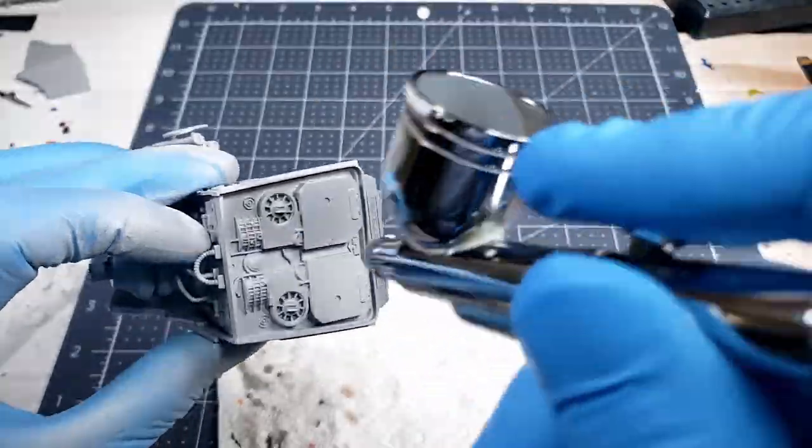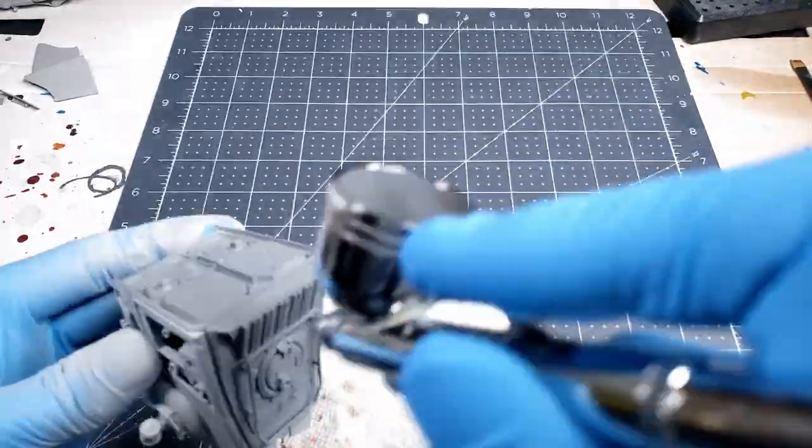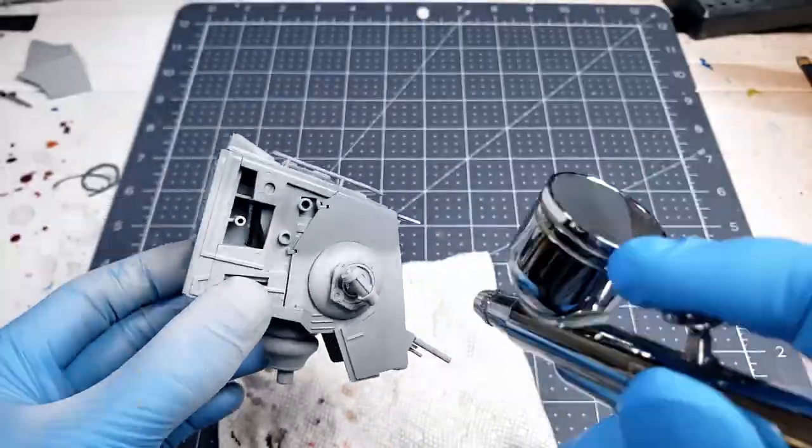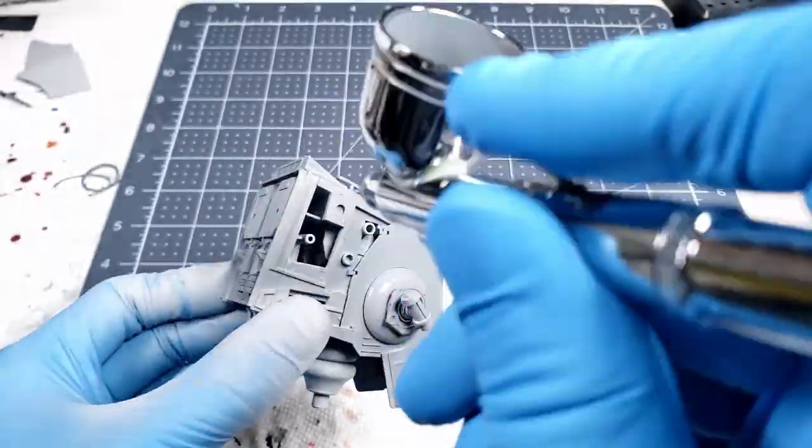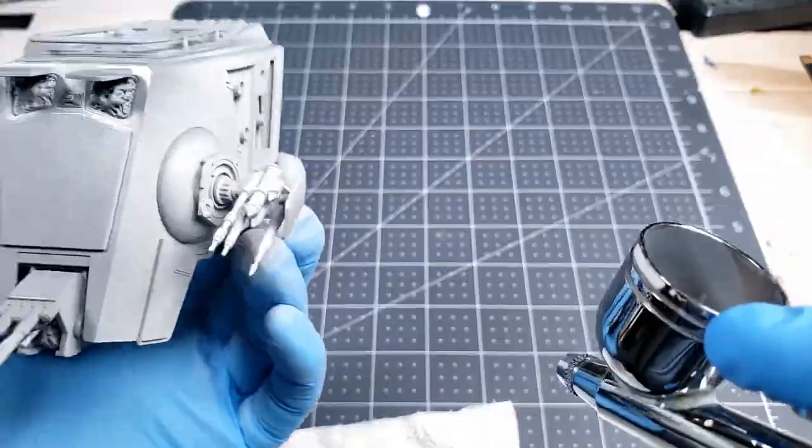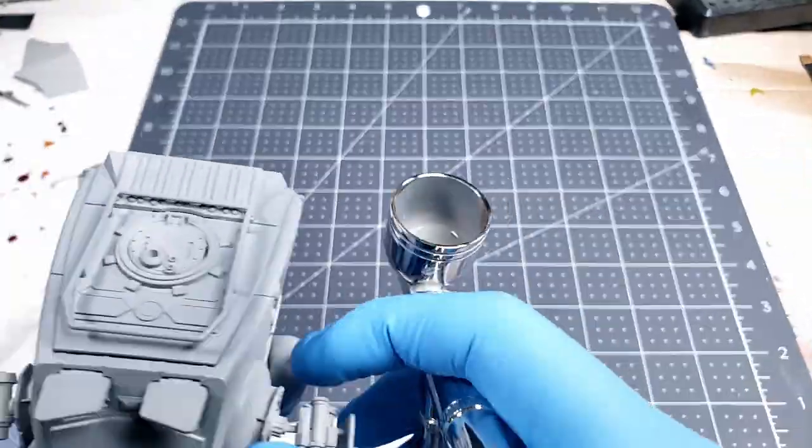So I see a lot of model builders do this technique of shading, giving it a dark undercoat, and then spraying a lighter color over top of it in a very precise fashion. That way it gives the edges and recessed areas a bit more of a shaded look. So that's what I plan on doing with the AT-ST.